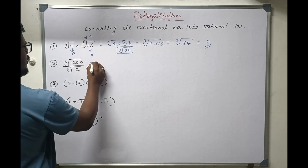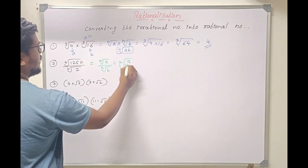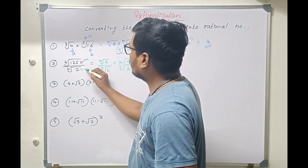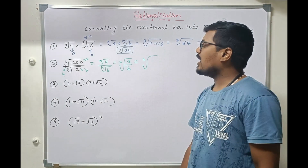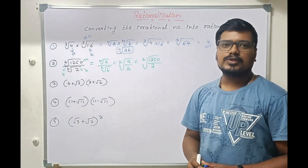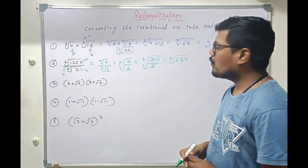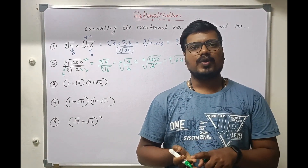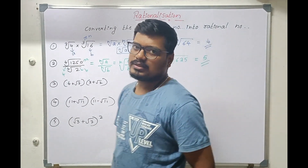Now for division, when the powers are same, the formula is: nth root of a divided by nth root of b equals nth root of a by b. Here a is 1250, b is 2, and n is 4. Substituting, we get the 4th root of 1250 divided by 2. We cancel with 2 to get the 4th root of 625. Since 5 to the power 4 is 625, the answer is 5.